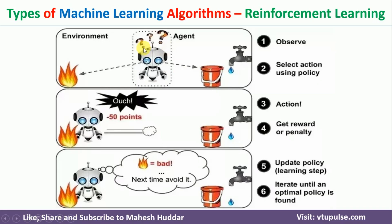Take an example: the agent has two choices — it can go toward a tap, or toward a fire. If it goes toward the tap, it is given a reward; if it goes toward the fire, it is given a penalty. As the agent performs actions, these rewards and penalties are recorded. For the set of actions where it has received the maximum reward, that is considered the learned parameters. This is about reinforcement learning.